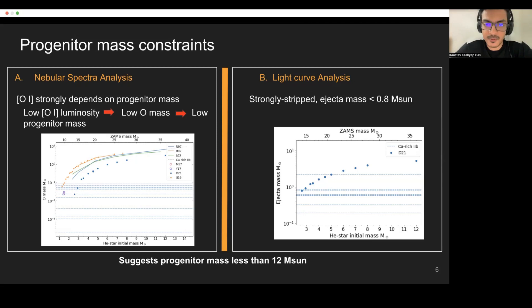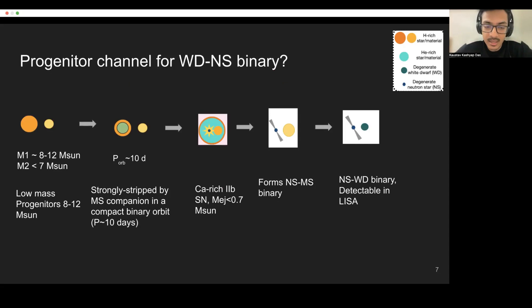What is a potential channel for this kind of calcium-rich Type IIb supernovae? Are these a new class, a new population? What we think is that one of the stars is a low-mass progenitor in the 8 to 12 solar mass regime with a companion of around less than 7 solar mass, and that it's strongly stripped by a main sequence companion in a compact binary orbit of around 10 days, which would result in this strongly stripped low ejecta mass calcium-rich Type IIb supernovae.